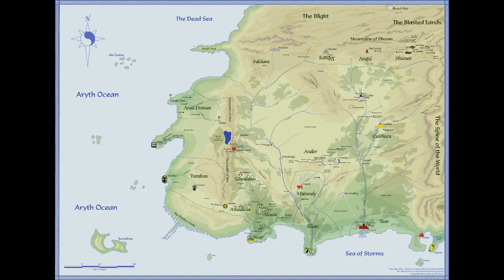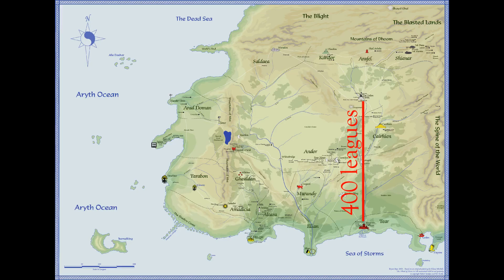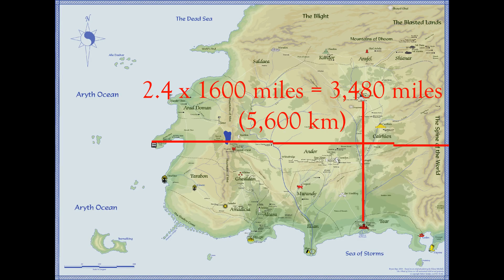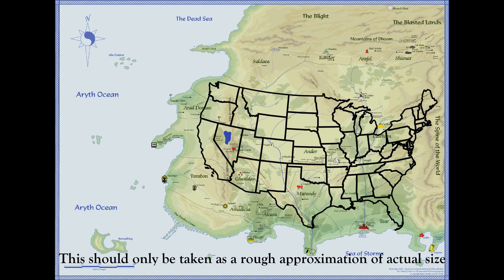Robert Jordan said in interviews that he always thought the Westlands — the subcontinent where most of the events of the series take place — is about the size of two American states, because otherwise it would take too long to get anywhere. But the measurements that actually appear in the books and companions make the continent seem a lot bigger than that. In New Spring, the distance between Tar Valon and the city of Tyr is said to be 400 leagues as the crow flies, and the reference book The World of Robert Jordan's The Wheel of Time says one league equals four miles. Chris Lau used these numbers and figured out that the Westlands were 3,480 miles across — substantially wider than the entire contiguous United States, and quite a lot bigger than the couple of states Jordan actually wrote.